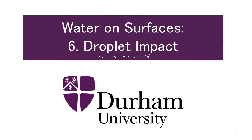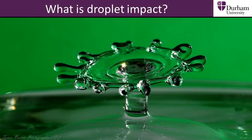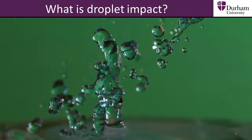When we drop an object into water, we often see a splash after the object has broken through the surface. These splashes come in all different shapes and sizes, but what about when it is the other way around — when it is water hitting the surface of a solid object?